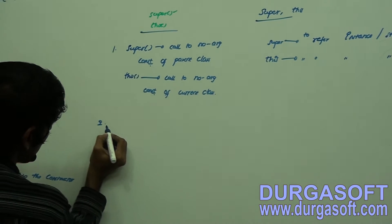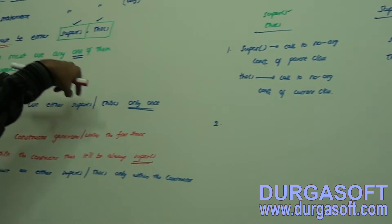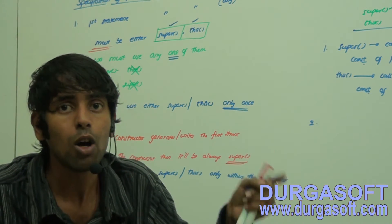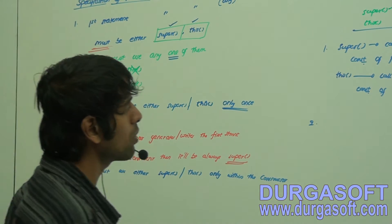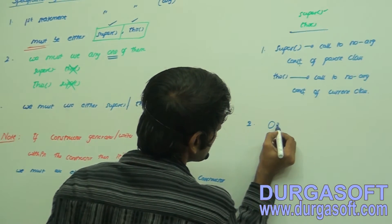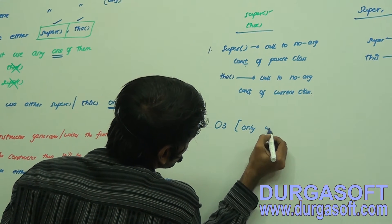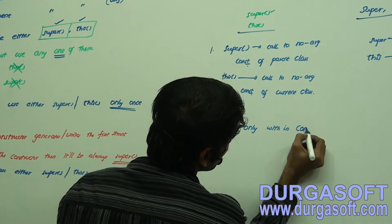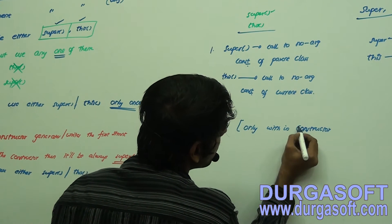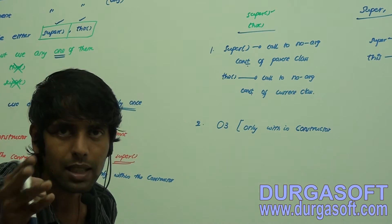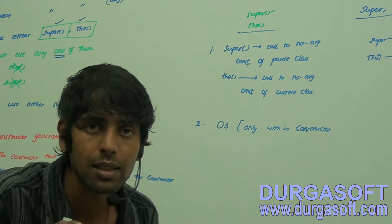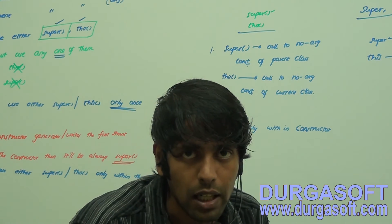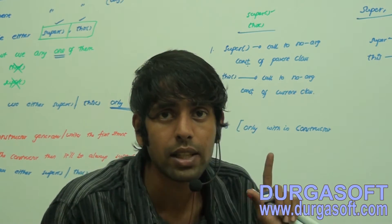Coming to the next restriction: super(), this() — all three of these can be used only within the constructor, only as the first statement, and only once. That's it — only within the constructor, whether it's a parameterized constructor, a user-defined no-argument constructor, or a default no-argument constructor.